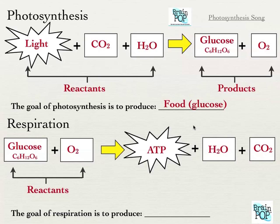Where does the glucose come from that all of your cells need? From food. That bowl of porridge you ate this morning — right now it's being digested and broken down. Our body can convert just about any nutrient into glucose: fat, protein, or carbohydrates. The foods we eat are where we get our glucose. And where do we get the oxygen? From the air we breathe in. When we breathe in, our blood absorbs oxygen and it eventually makes its way to our cells, to the mitochondria, so that respiration can take place.